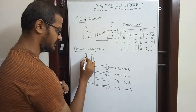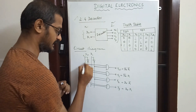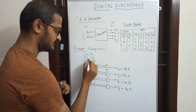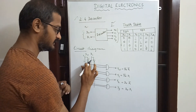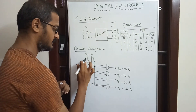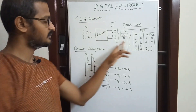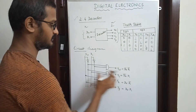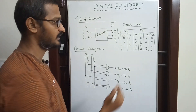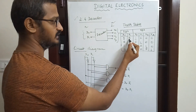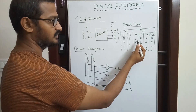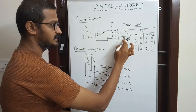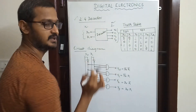Now let's look at the input lines. This line is the 0 input, and this line goes through an inverter, giving us a 1. Why do we do this? Looking at the truth table and the equations, we examine the high-low combinations. If we multiply these two lines together, we will get the output.